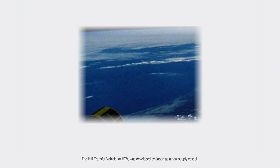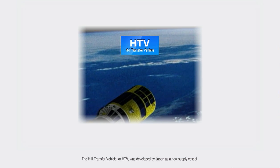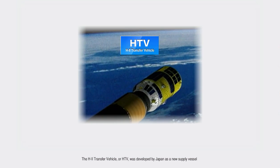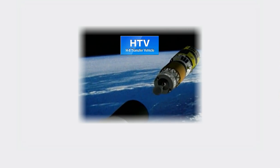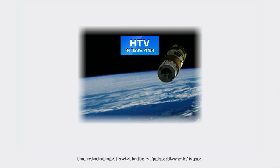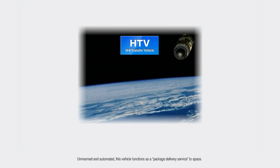The H2 Transfer Vehicle, or HTV, was developed by Japan as a new supply vessel designed to resupply the space station. Unmanned and automated, this vehicle functions as a package delivery service to space.